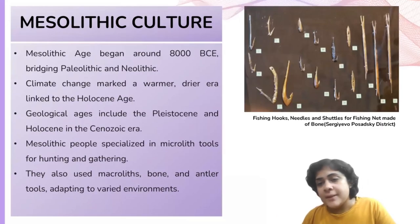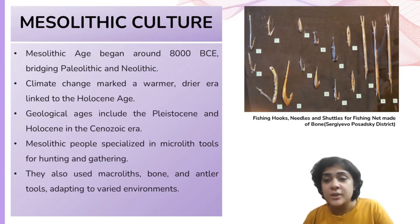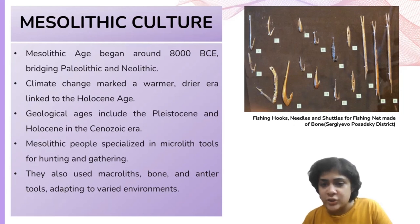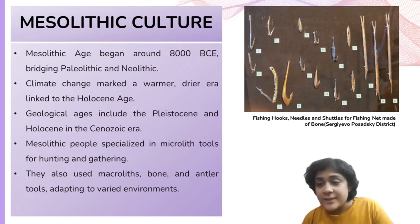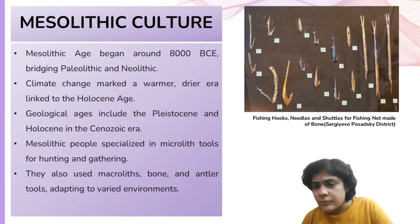The Mesolithic era commenced around 8,000 BCE, bridging the gap between the Paleolithic and Neolithic ages. This period coincided with rising temperatures and a warmer, drier climate impacting both human life and the natural world. According to Upinder Singh, in geological classification, Earth's history is divided into four eras: Primary (Paleozoic), Secondary (Mesozoic), Tertiary, and Quaternary. The Tertiary and Quaternary together constitute the Cenozoic, or the Age of Mammals, commencing about 100 million years ago.